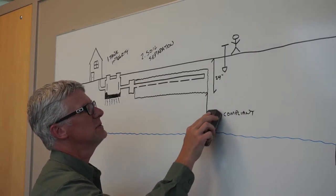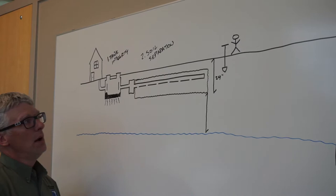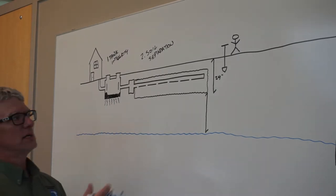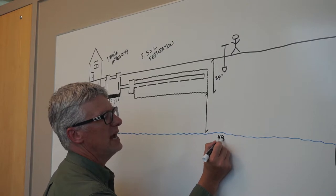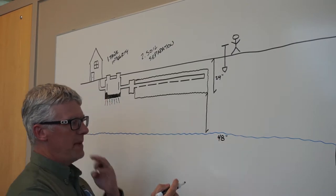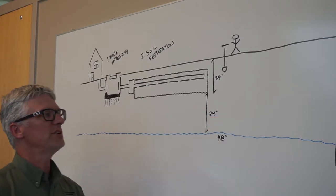Now let's look at some different numbers in this same scenario. So the system is still 24 inches from grade. The compliance inspector goes out, conducts a soil observation and determines that there's water table at 48 inches. Now doing the math, 48 minus 24, we have 24 inches of vertical separation.